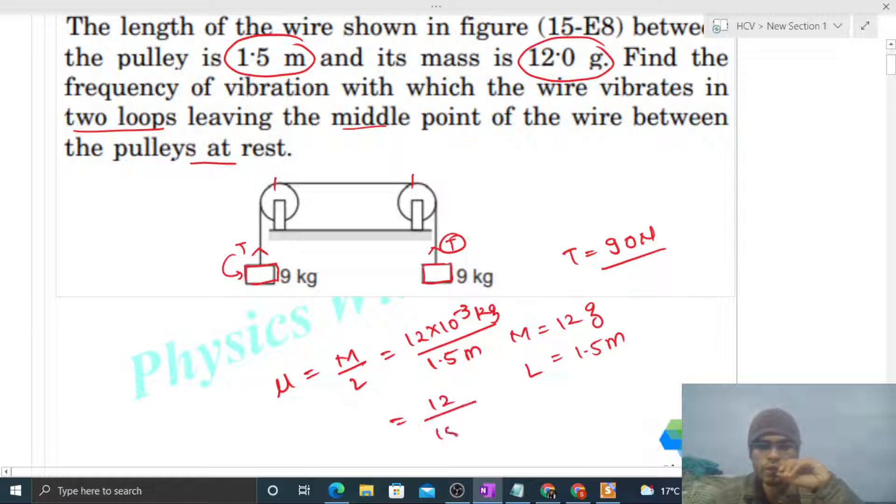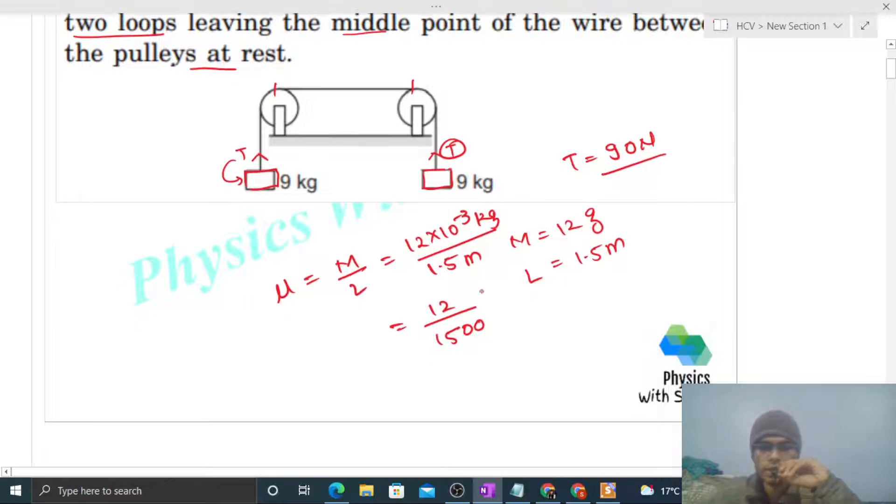Let me simplify this. It will be 12 divided by 1500. We can simplify further: 12 divides to give 1 by 5, so it becomes 1 divided by 125 kilograms per meter. Right? This is the linear mass density.